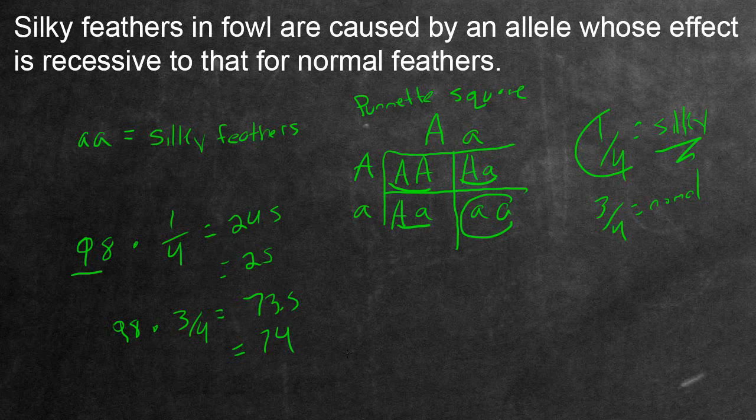And as one last question to end off the video, if you had a normal feathered bird, what would be the easiest way to determine if it was homozygous or heterozygous? So what does it mean to be normal, a normal bird in this situation, to not be silky? Well, as I just finished saying, you can either be homozygous dominant, you can have big A, big A, or you can be heterozygous, A, a.